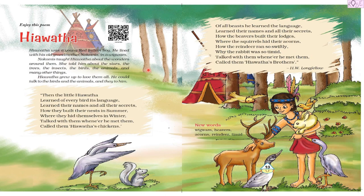Then the little Hiawatha learned of every bird its language, learned their names and all their secrets — how they build their nests in summer, where they hid themselves in winter. He talked with them whenever he met them and called them Hiawatha's chickens.